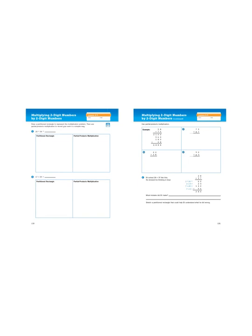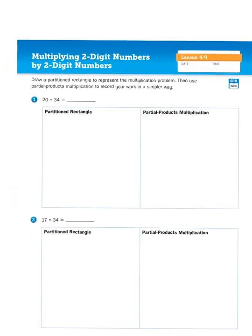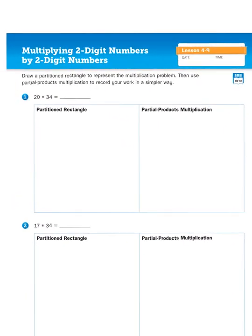So we are in our math journals on pages 130 and 131, and let's start by taking a look at the first problem that they offer us. It says, draw a partition rectangle to represent the multiplication problem, then use partial products multiplication to record your work in a simpler way.